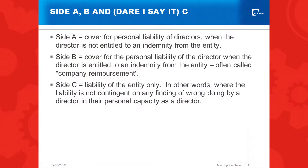It's probably question number one that most boards ask: how's the D&O program? What does it involve? One of the key messages today is the difference between management liability and D&O, and really getting our head around how entity cover is different to cover for directors. Side A is cover for the personal liability of directors when the director is not entitled to an indemnity from the entity. Side B is cover for the personal liability of the director when the director is entitled to an indemnity from the entity — often called company reimbursement cover. And then side C is the liability of the entity only.